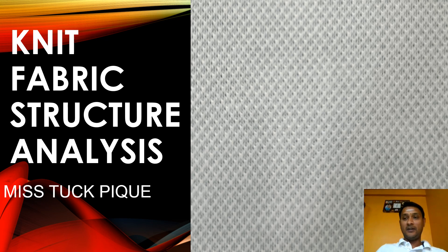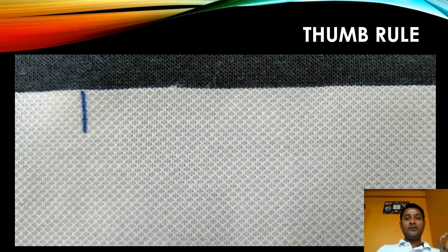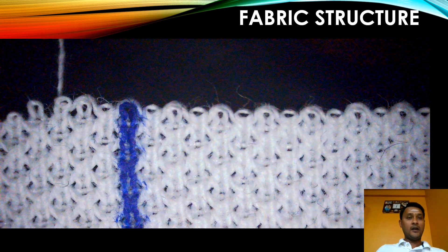As usual, we need to follow our thumb rule as a mandatory step: we need to remove the loosened threads, followed by drawing the vertical line to ensure the structure analysis is a perfect one. Now I am going to unravel course number one.